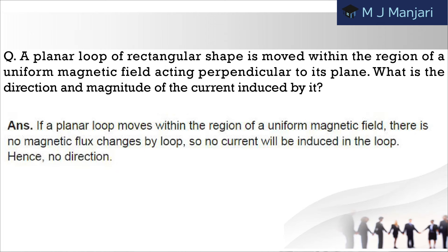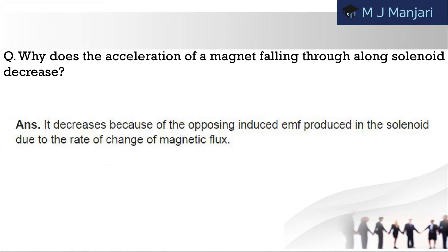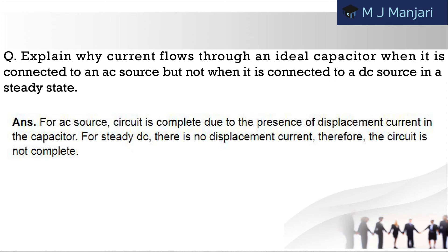Next: a planar loop of rectangular shape is moved within the region of a uniform magnetic field acting perpendicular to its plane. What is the direction and magnitude of current induced by it? Next: why does the acceleration of a magnet falling through a long solenoid decrease? Next: explain why current flows through an ideal capacitor when it is connected to an AC source but not when it is connected to a DC source in a steady state.